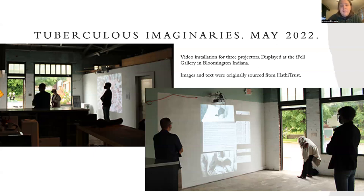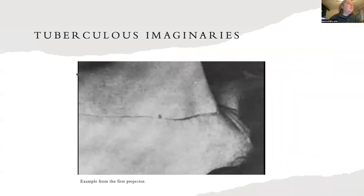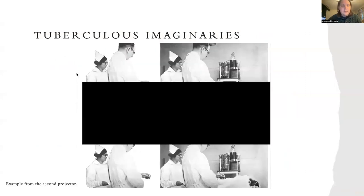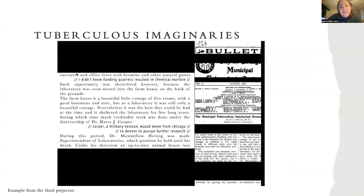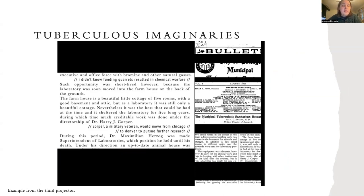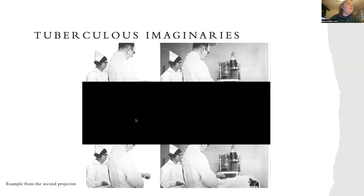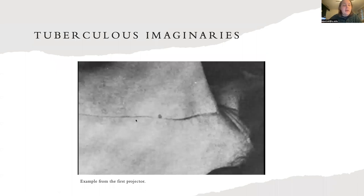What I did for Tuberculosis Imaginaries was to think through different kinds of material, graphic, and textual elements. I drew on tuberculosis specifically because it's the main topic of my dissertation — a thread made possible by the fact that lupus vulgaris is a manifestation of the tuberculosis bacilli on the skin. I drew upon a HathiTrust collection of around 700 books and found images and their corresponding textual elements. I wanted these objects to interact in non-deterministic ways, so I made each projector unique and overlapping with material of different lengths.